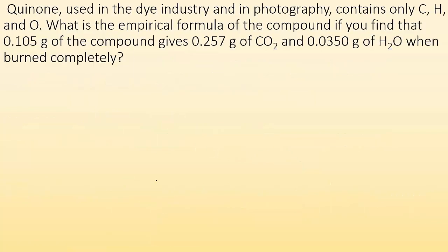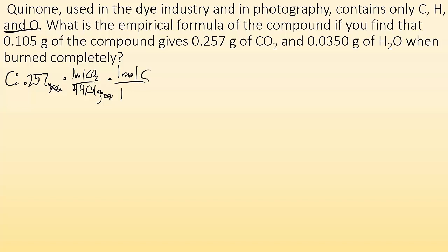Let's do another example. Quinine, used in the dye industry and in photography, contains only carbon, hydrogen, and oxygen. What is the empirical formula if 0.105 grams of the compound gives 0.257 grams of CO2 and 0.0350 grams of H2O when burned completely? Starting with carbon: 0.257 grams of CO2 times one mole over 44.01 grams times one mole carbon per mole CO2 gives 0.00584 moles of carbon.